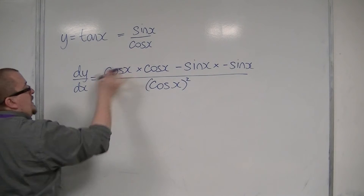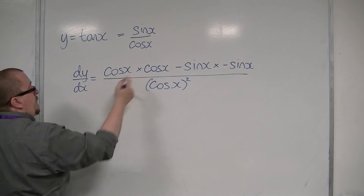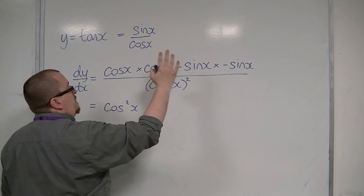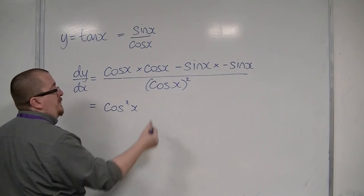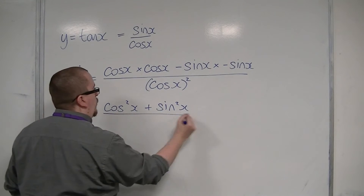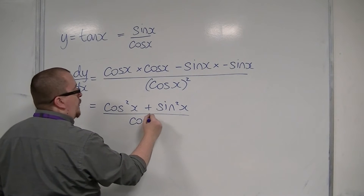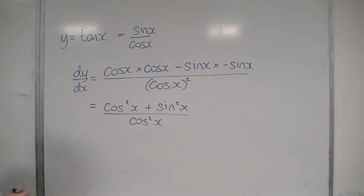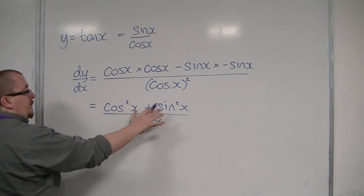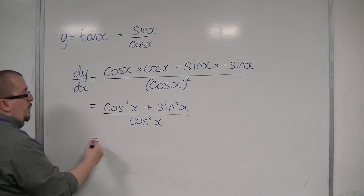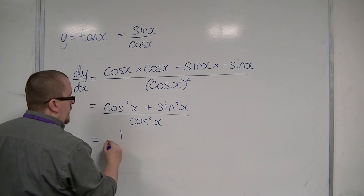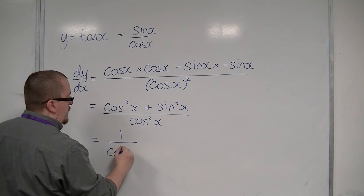Now, in the numerator we have cos times cos, so cos squared. We have minus sine times minus sine, so plus sine squared x, all over cos squared x. Now, sine squared plus cos squared is one of the trig identities, and that's equal to 1. So that gives us 1 over cos squared.